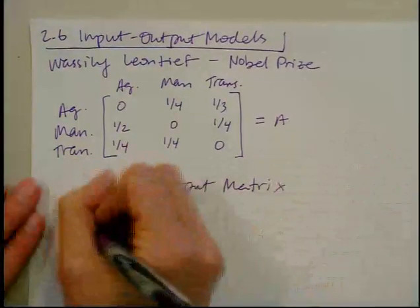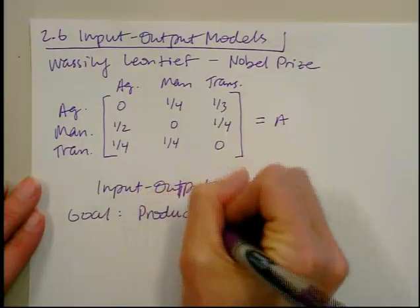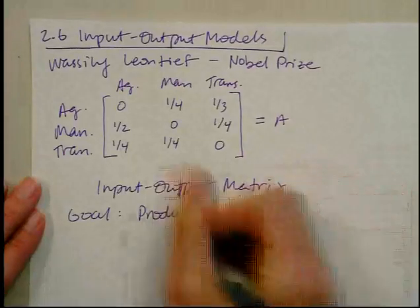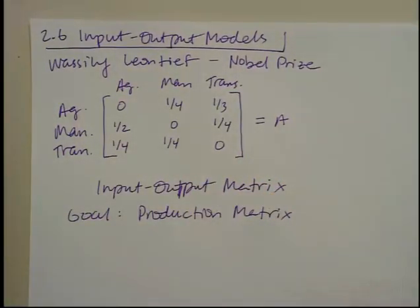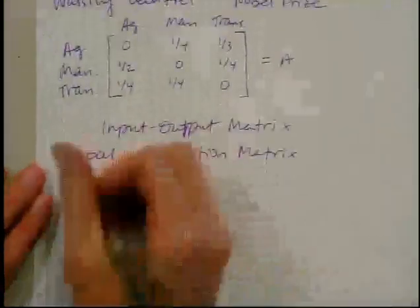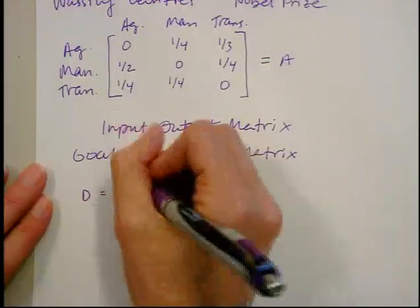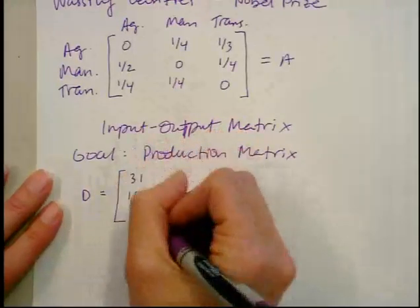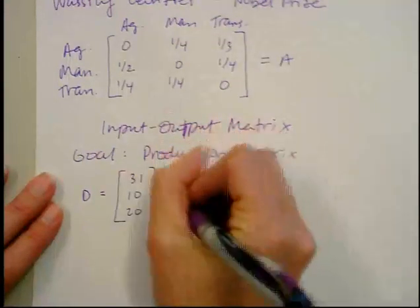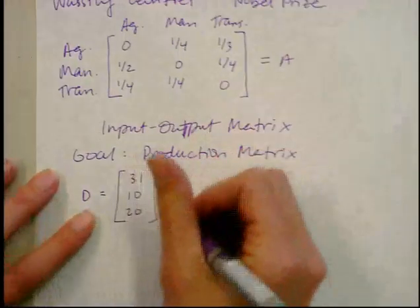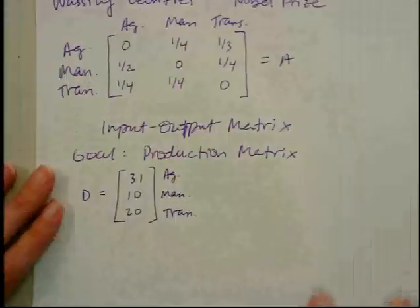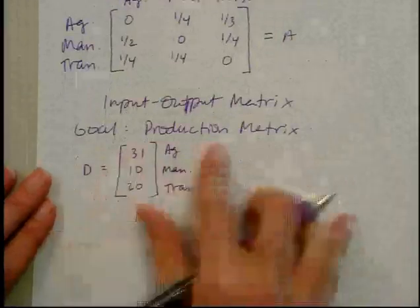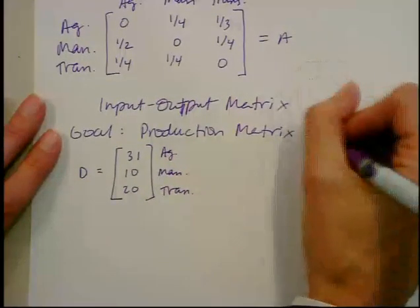Our goal here is to figure out the production matrix — the total amount of each commodity that needs to be produced. Along with this, we also have a demand matrix. The demand matrix gives you the demand in units for each of those commodities. For this example, the demand matrix is 31, 10, and 20 — units of agriculture, manufacturing, and transportation respectively. Some of those values get used up, so we need to find how much needs to be produced in total.